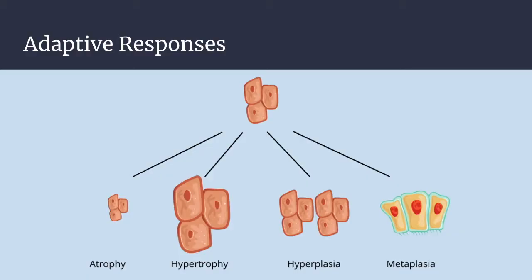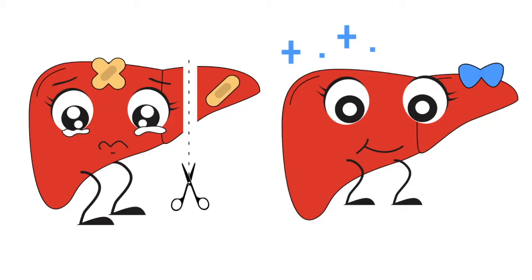Next, hyperplasia. This is an increase in the number of cells in an organ or tissue in response to a stimulus, usually growth factor-driven proliferation of mature cells. In some cases there is increased output of new cells from tissue stem cells. Although distinct from hypertrophy, hyperplasia often occurs alongside it. Since cells are increasing in number, this is seen in tissues where cells are capable of dividing.